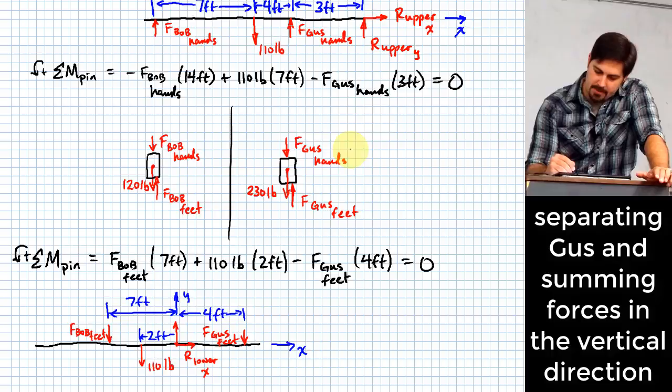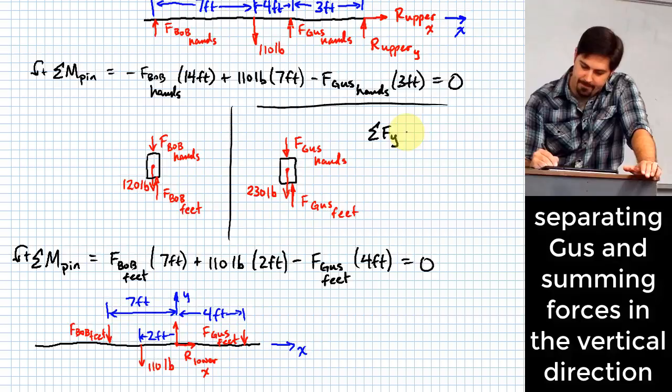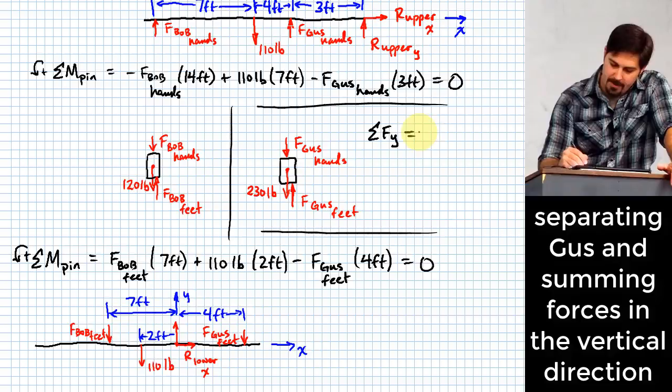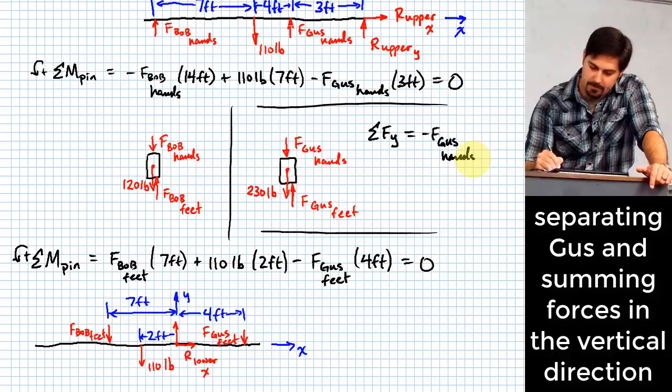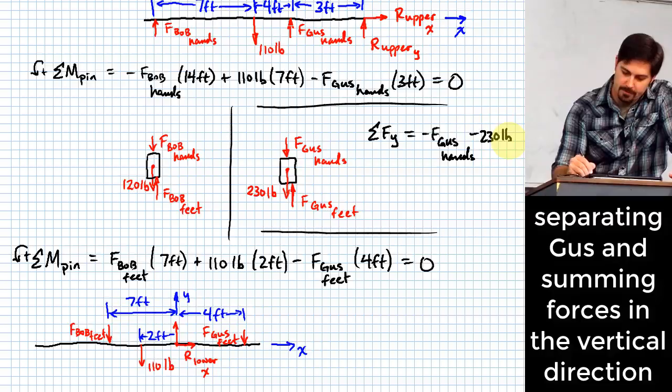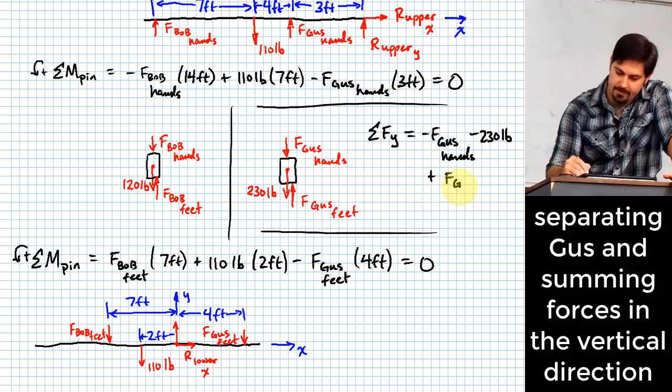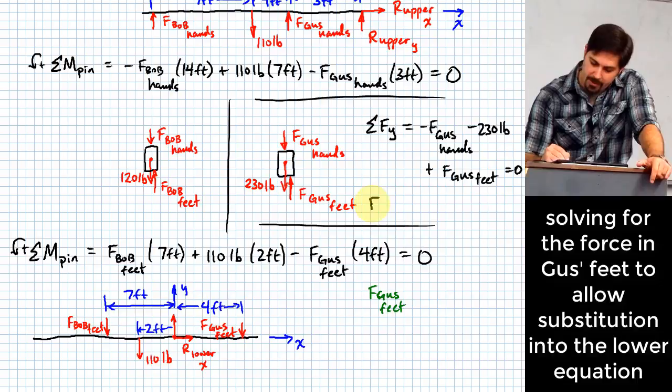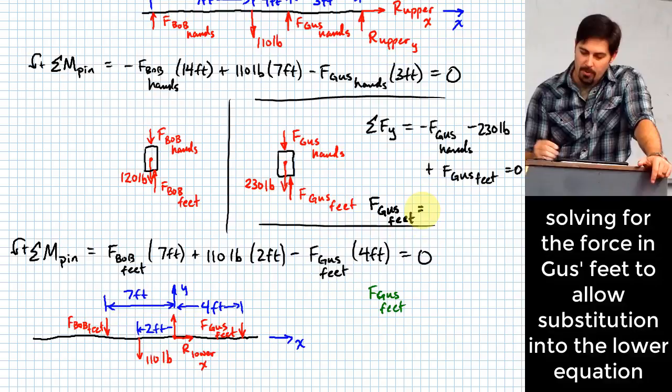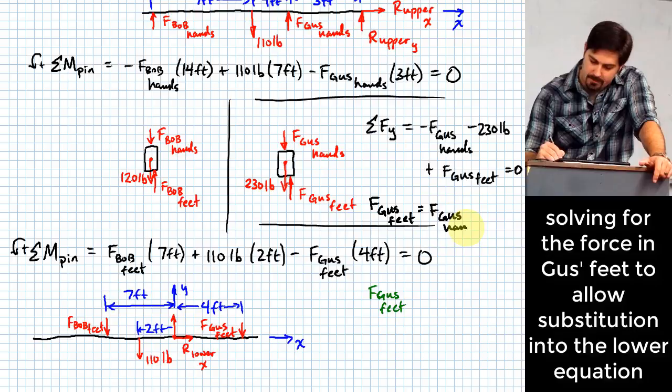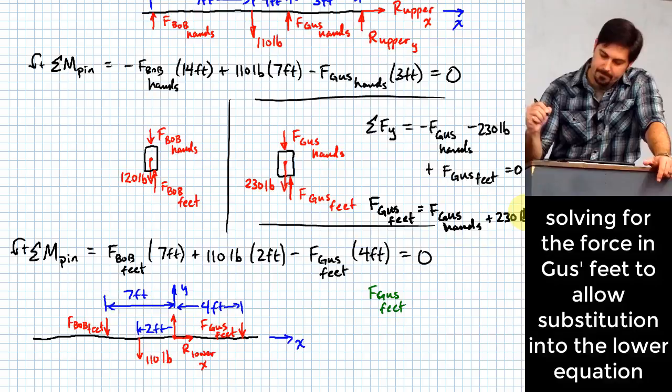Now for these diagrams here, for Gus, we can sum forces in the Y for Gus. By sum forces in the Y, I have minus F_Gus hands. Then what? Minus 230 pounds. Then what? Plus F_Gus feet. Plus F_Gus feet. Equals zero. To solve this for F_Gus feet. And what would that be? F_Gus hands. What then? Plus 230 pounds.